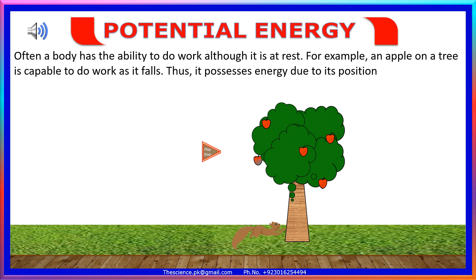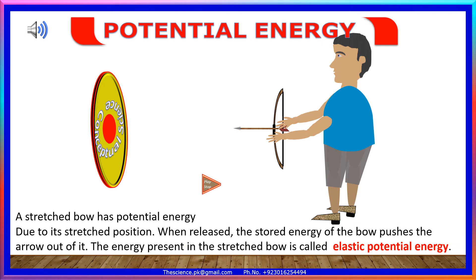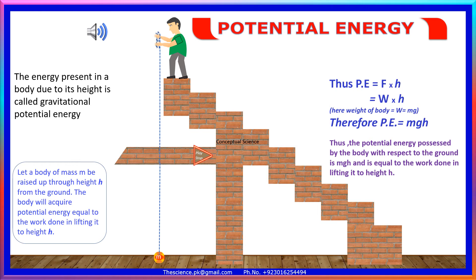Potential energy means a body has the ability to do work although it is at rest. For example, an apple on a tree is capable of doing work as it falls — it possesses energy due to its position. A stretched bow has potential energy due to its stretched position; when the stored energy of the bow pushes the arrow out, this is called elastic potential energy. The energy present in a body due to its height is called gravitational potential energy.